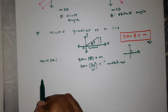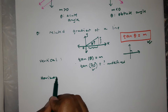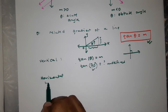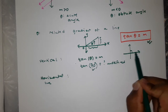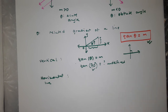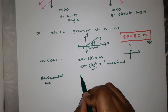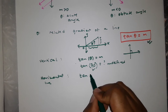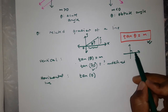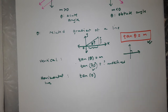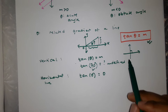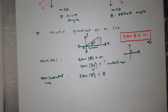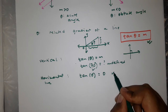What about horizontal lines? Just imagine you've got a line like this. What is the angle being made there? The angle of a horizontal line is actually 0 — there is a 0-degree angle. And what is the tangent of 0? The tangent of 0 is 0. So, to emphasize, the gradient of a horizontal line is 0.